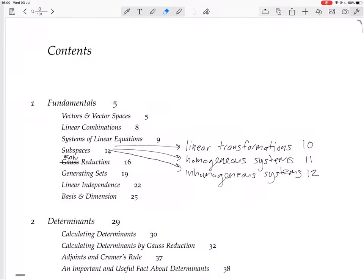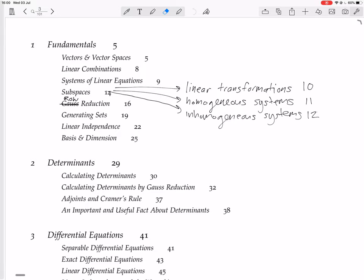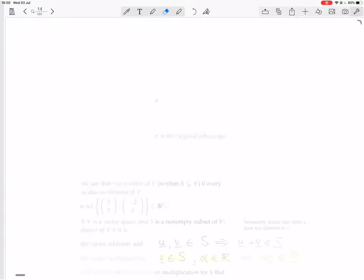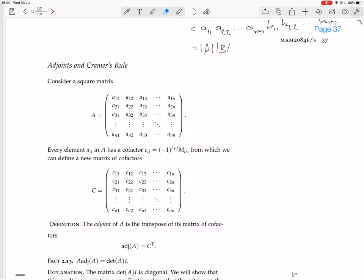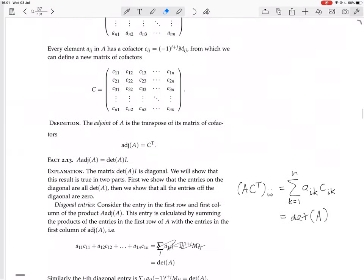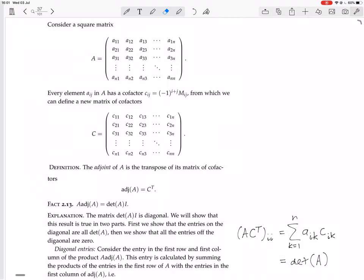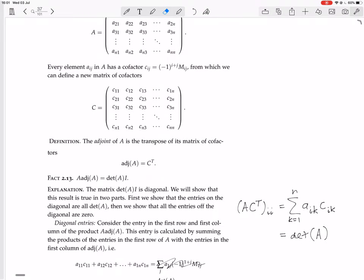Okay, so now we are looking at, we're continuing to look at adjoints and Kramer's rule. We defined what the adjoint was, we found that when we multiply the adjoint by A times the adjoint, you get the determinant of A.